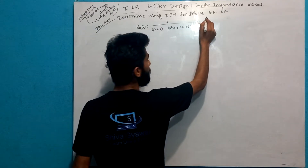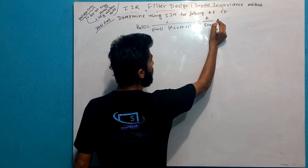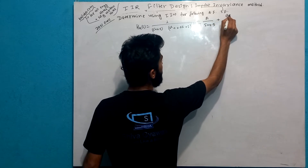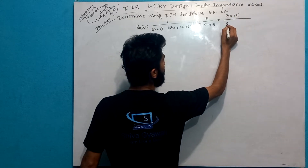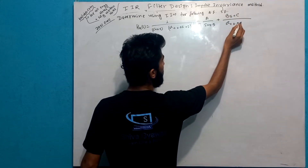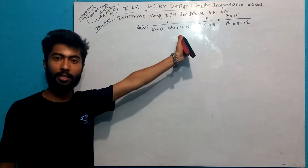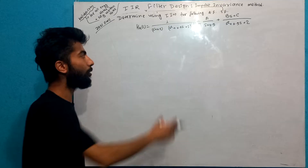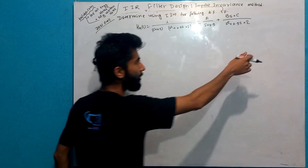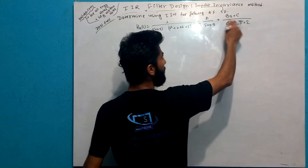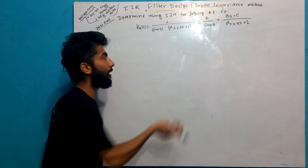So we need to use the same method. We set up A by (S plus 0.5) plus (BS plus C) by (S squared plus 0.5S plus 2). In this case, if we are doing parallel realization, we can use S terms. When we compare the BS plus C term, we will use S as a derivative, and we can use the constant term method.